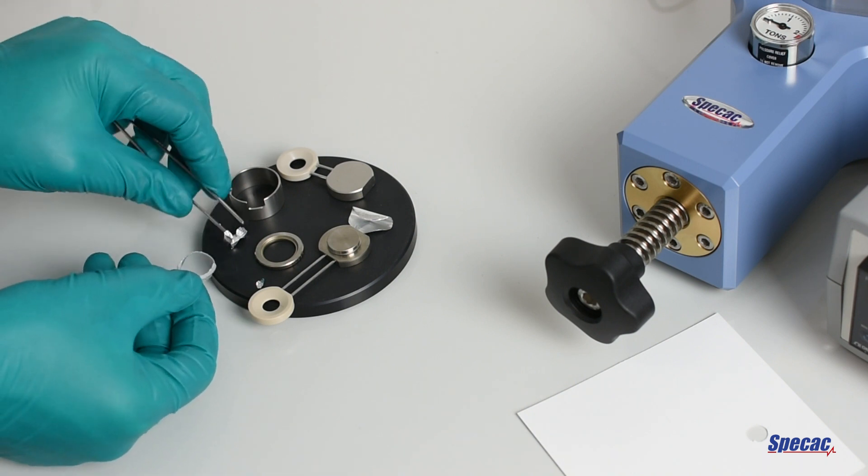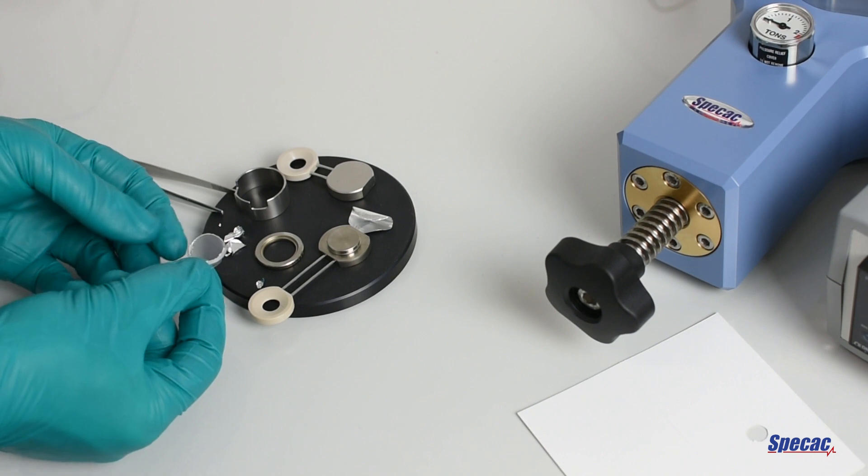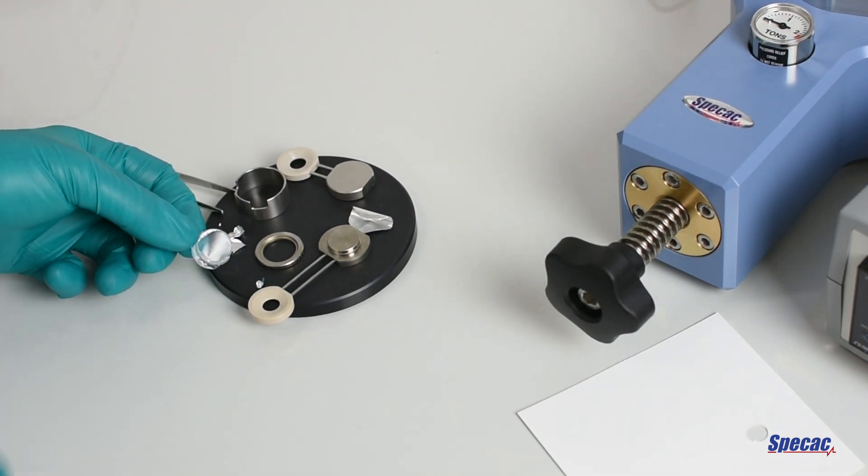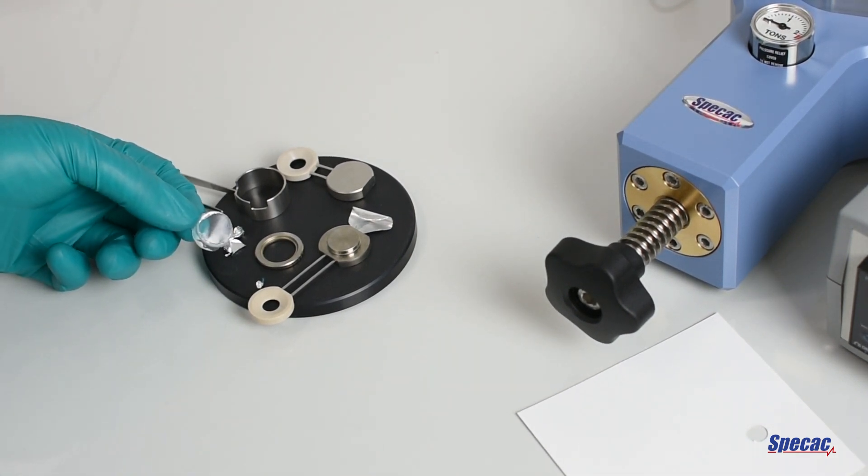When the aluminum foils have been removed, a thin film of approximately 15mm in diameter, and of a thickness corresponding to the sizing ring, will have been produced.